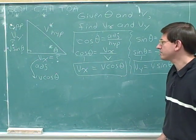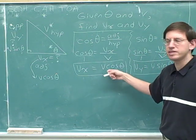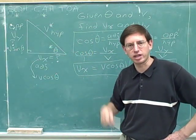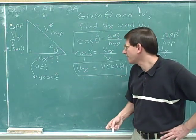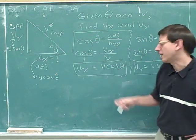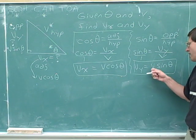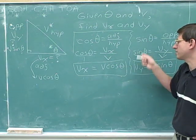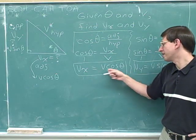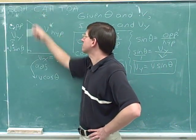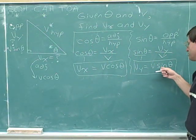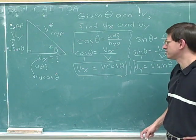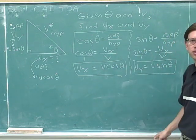Once you're adept at this material, you can skip the intermediate steps and go straight to the result. This is a standard problem in physics where you're given the hypotenuse and asked for the two legs. The adjacent leg is the hypotenuse times the cosine, and the opposite leg is the hypotenuse times the sine. After a while, you'll get so adept at trigonometry that you won't need to write out the preliminary steps. If you're not comfortable with that yet, there's no problem with writing them out.